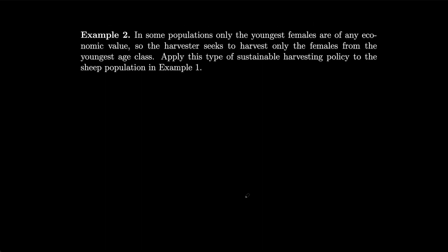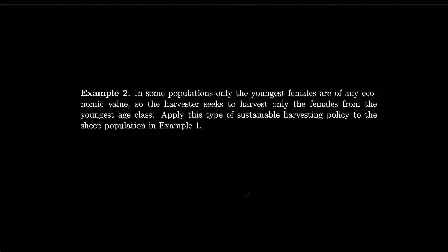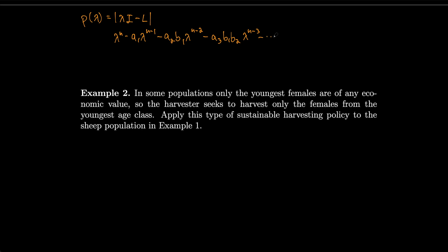As before, the characteristic polynomial for lambda I minus L is: lambda^n minus a1·lambda^{n-1} minus a2·b1·lambda^{n-2} minus a3·b1·b2·lambda^{n-3}, and so on.